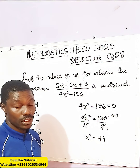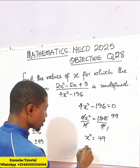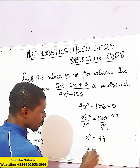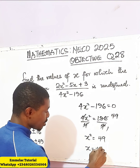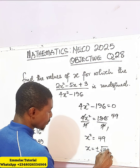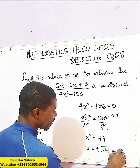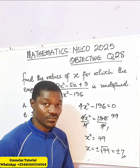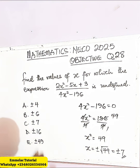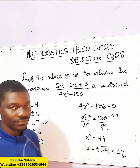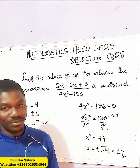Now let's square root both sides. By square rooting both sides, we end up having x equals plus or minus the square root of 49, and this gives us plus or minus 7. That's the final answer — option C is correct. Thank you and God bless you.